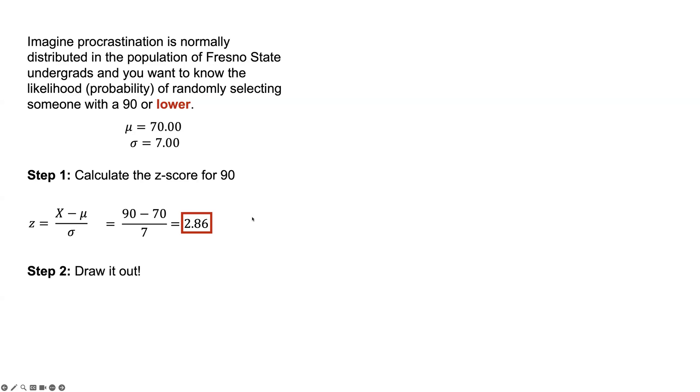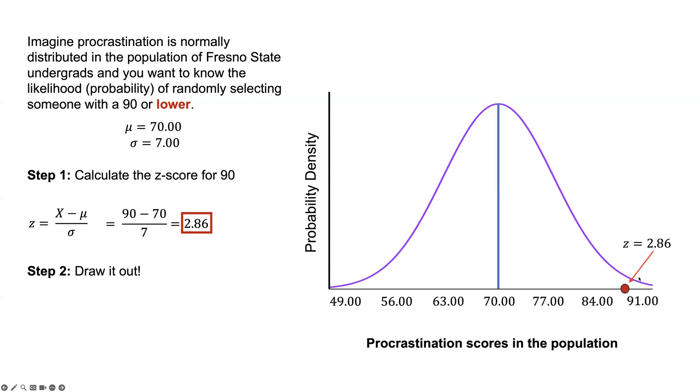I always recommend drawing it out because it helps you visualize where that falls on this graph. If I'm looking for 90 or lower, I'm looking for this area, so I would shade in the area that I'm looking for. That's a big part of it. You would expect it to be a pretty big probability that we would get a score that falls 90 or lower.